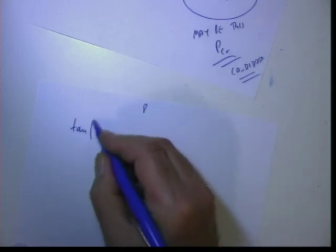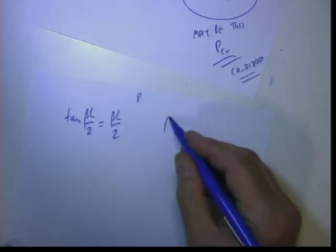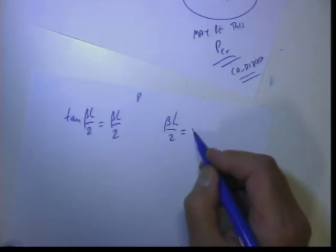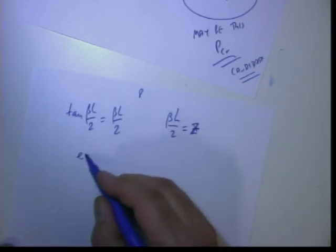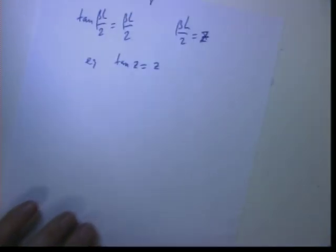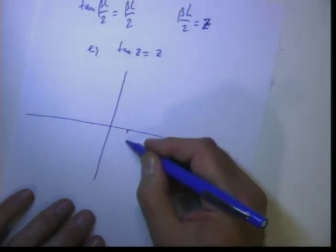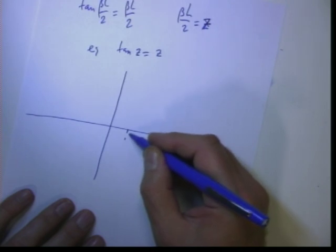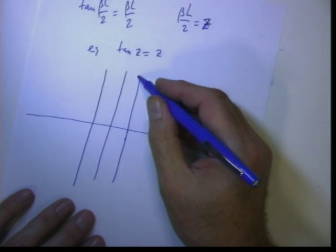Now I have a second equation. Tangent beta L over 2 equals beta L over 2. Let us denote beta L over 2 like z. So equation is tangent z equals z. Let us make this figure, tangent z. So that is π over 2, minus π over 2, and this guy goes like this.